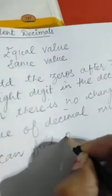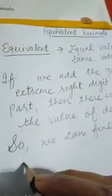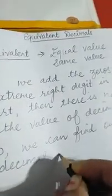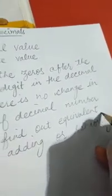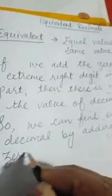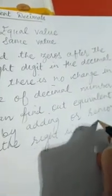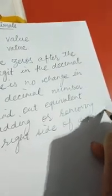So here we can say we can find out equivalent decimals by adding or removing zero at the right side of the decimal number.